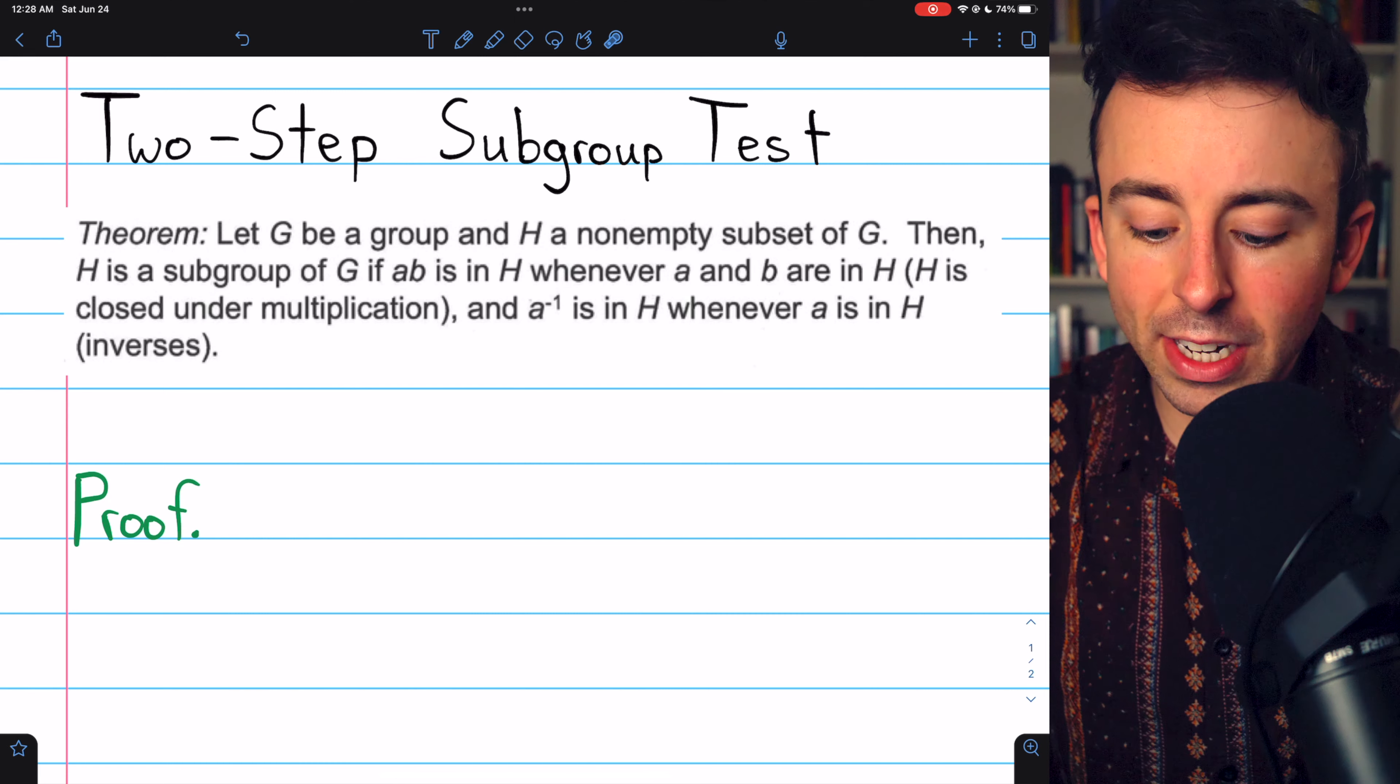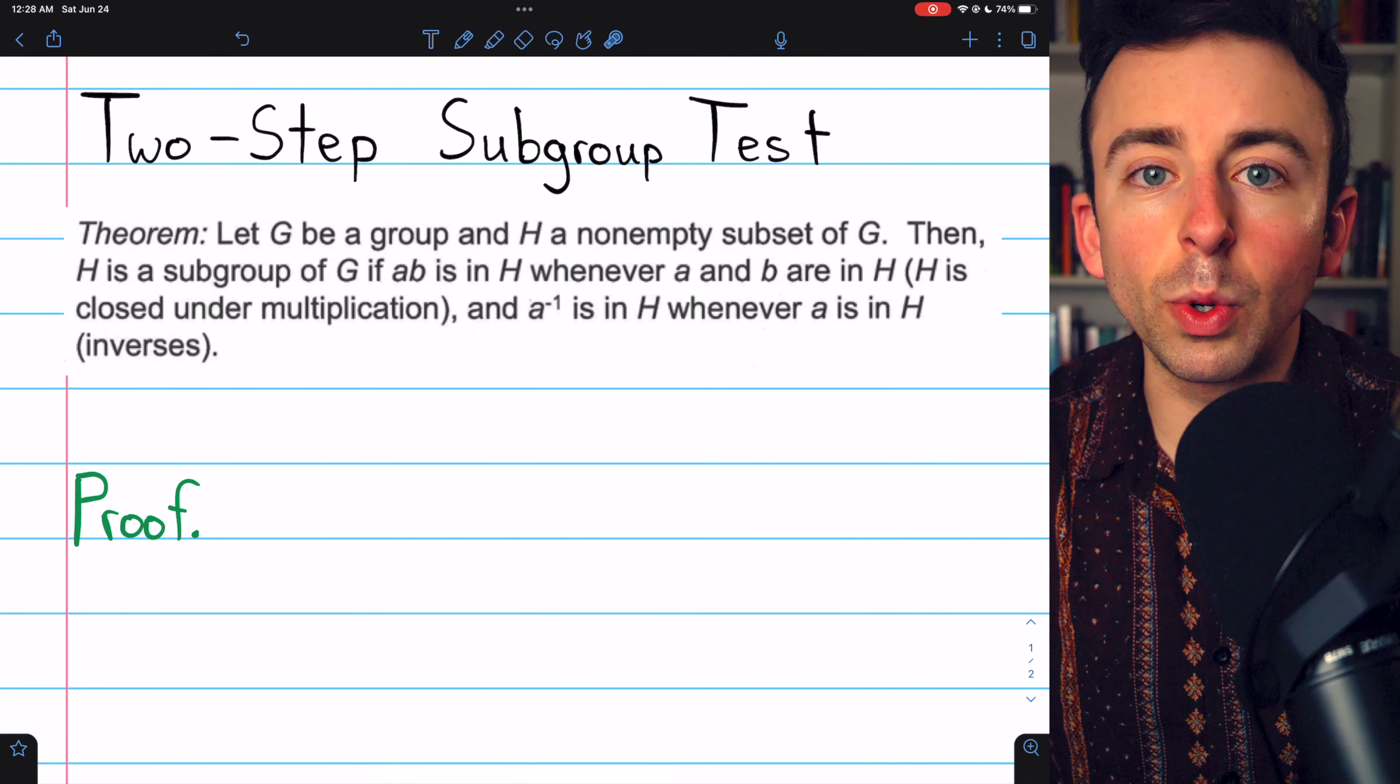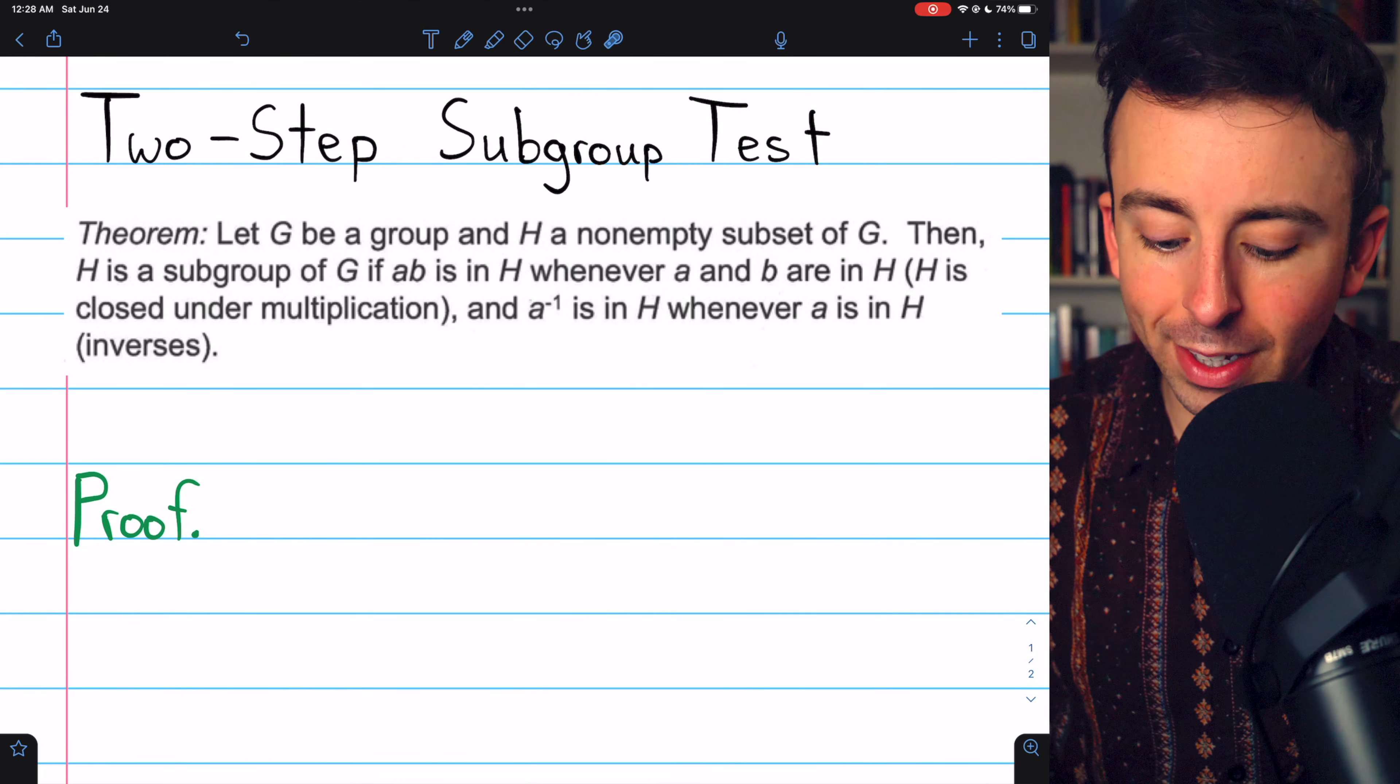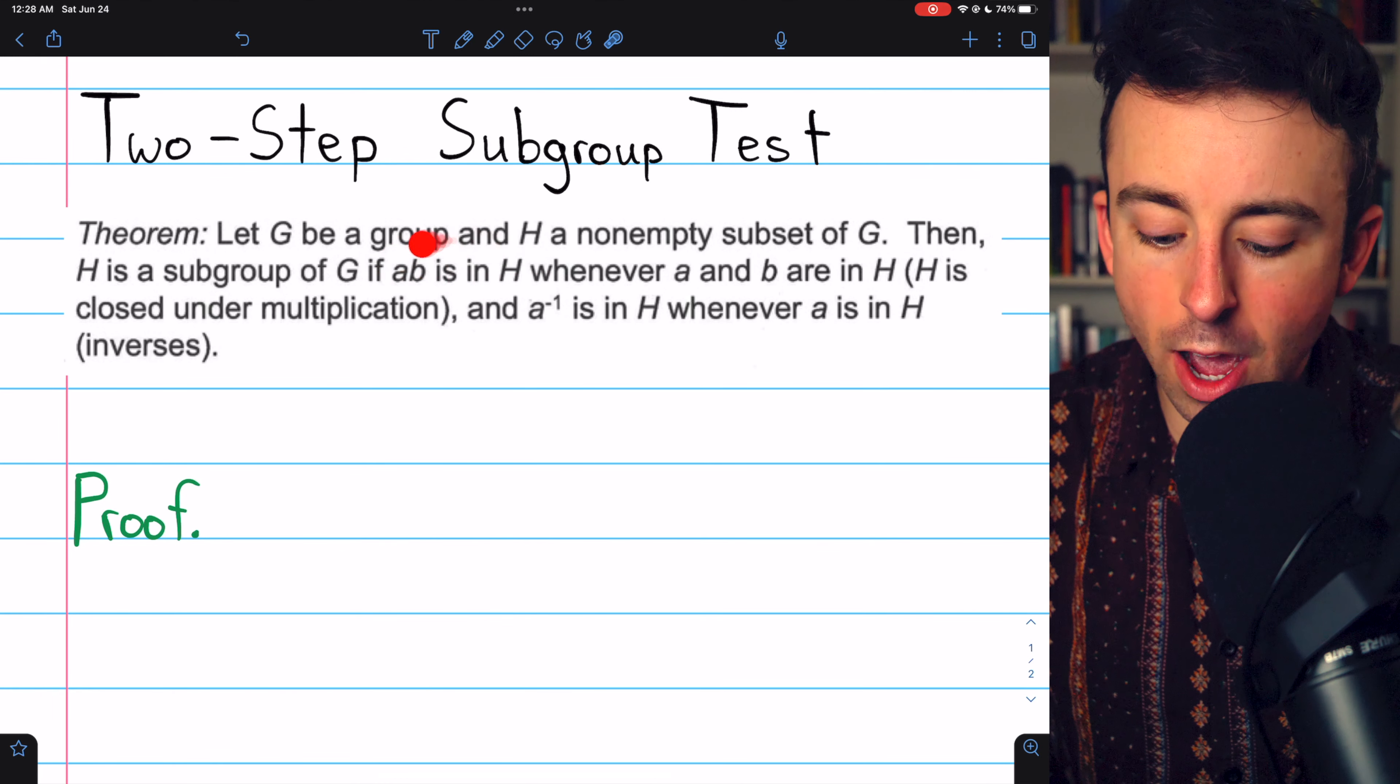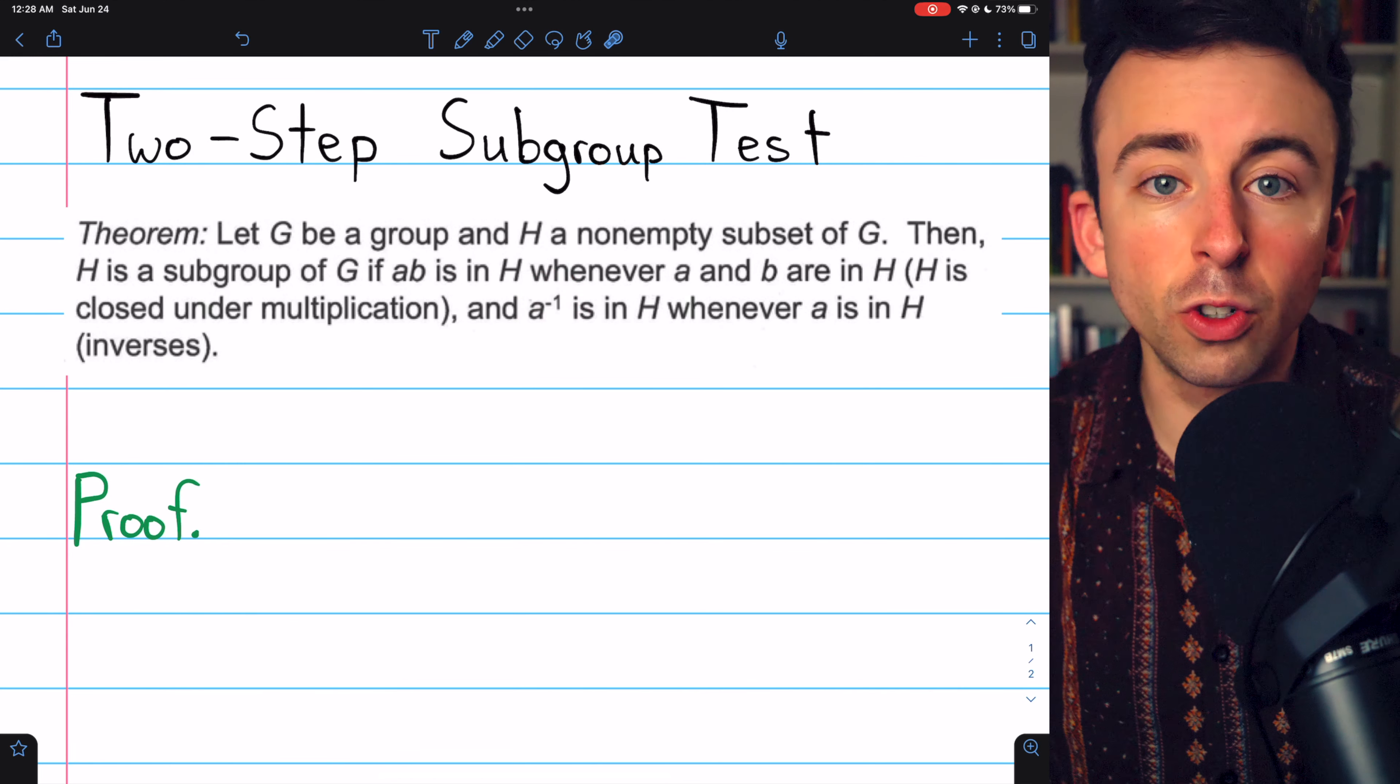Today, we'll prove the two-step subgroup test, which says there's only two things we need to prove to establish that H is a subgroup: that it's closed with respect to the operation, and that it's closed with respect to inverses.